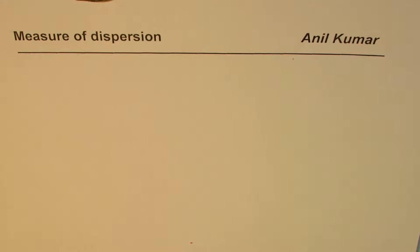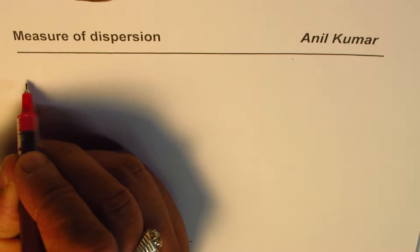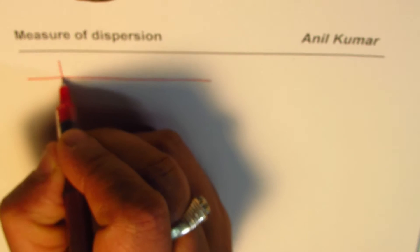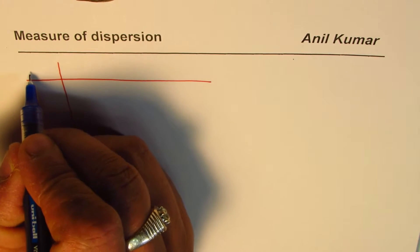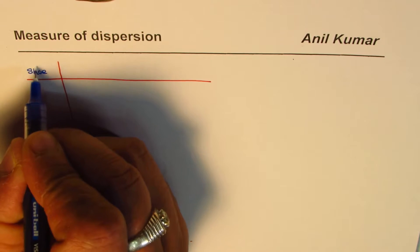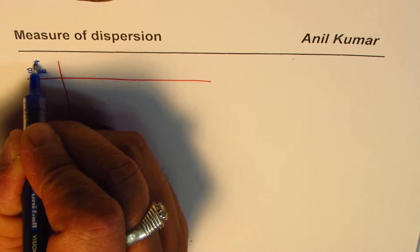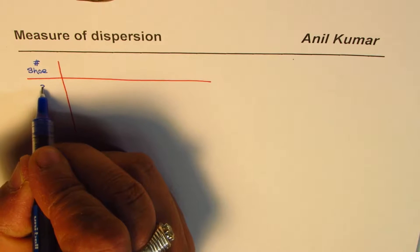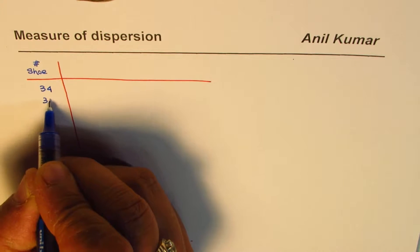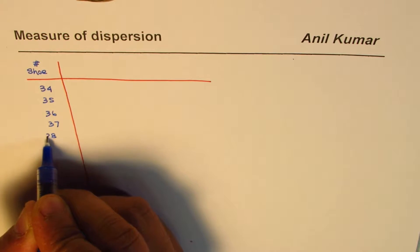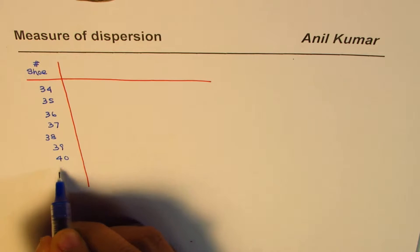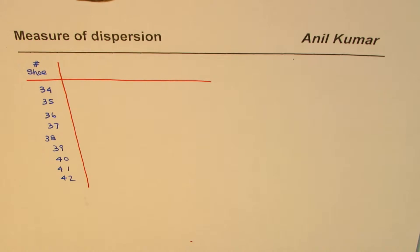I'm Anil Kumar and in this video we'll talk about measure of dispersion. Let me take up an example here — shoe sizes of students in grade 10. Let's take sample data for shoe size. The numbers are: 34, 35, 36, 37, 38, 39, 40, 41, 42. These are different shoe sizes.